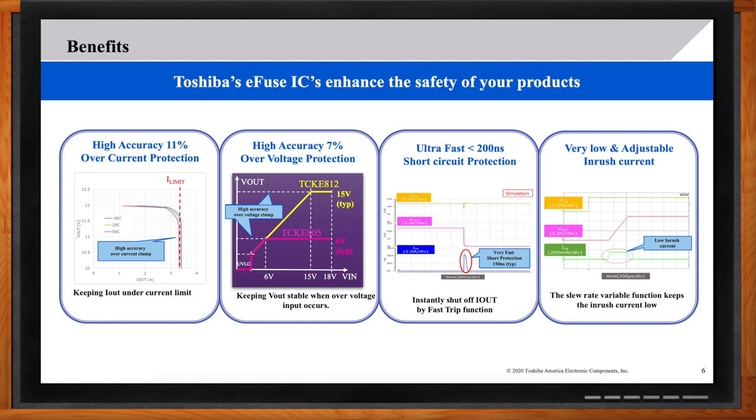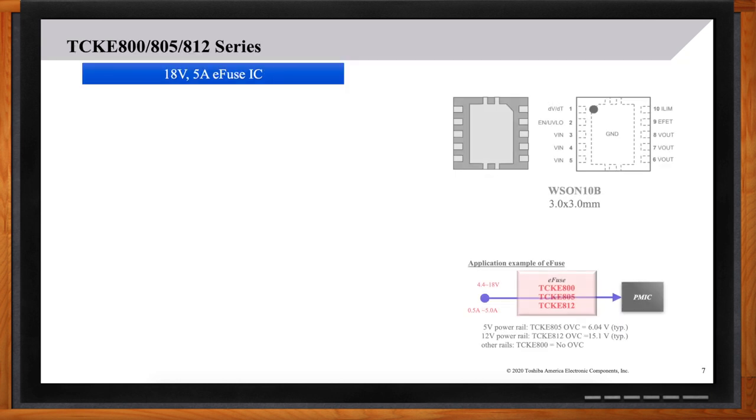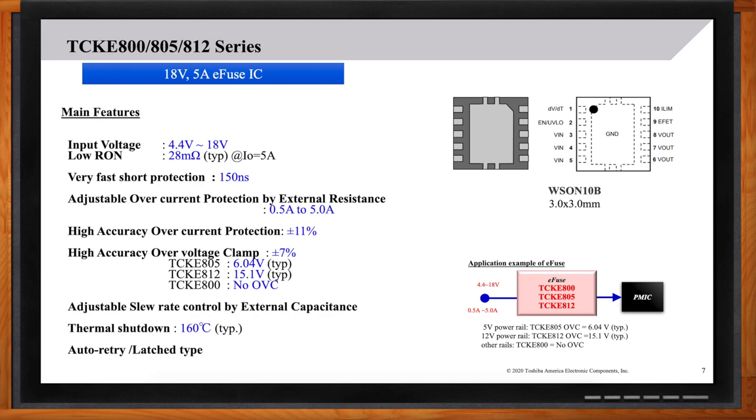200 nanoseconds. That's going to shut things down before anything bad can happen in my circuit. So, I understand that Toshiba just came out with your first line of e-fuses. Can you give me a glimpse into what those look like? That's correct. We have just released our newest TCKE 800, 805, and 812 series e-fuses. The 805 covers 5-volt lines. 812 covers 12-volt lines. The 805 has a clamp of 6 volts and the 12 has a clamp of 15 volts. So, that's basically your upper limit when it comes to power line supply.